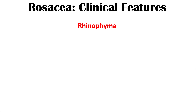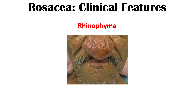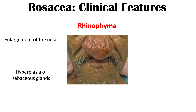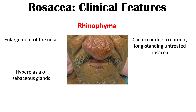Some patients develop rhinophyma — an enlargement of the nose due to hyperplasia of sebaceous glands. This can result from chronic, longstanding, untreated rosacea. Almost all cases of rhinophyma occur in males; it is very rare in female patients. Rhinophyma falls under the classification of the phimatis subtype of rosacea.